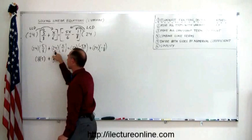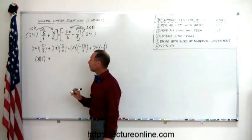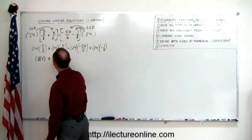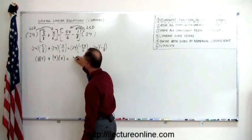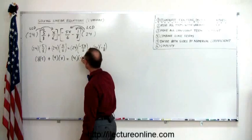Plus 6 goes into 24 four times. So this becomes 4 times x. 6 goes into 24 four times, so this becomes 4 times minus 5x.